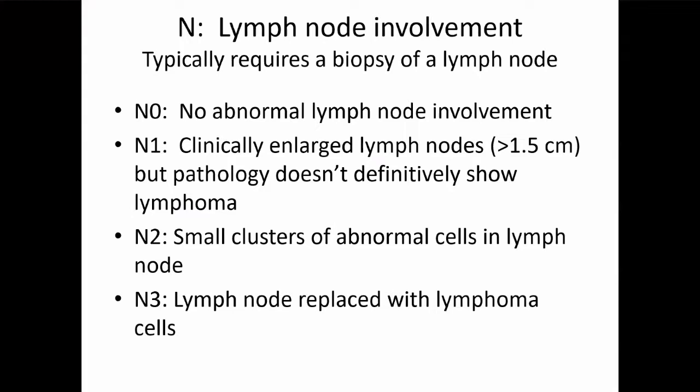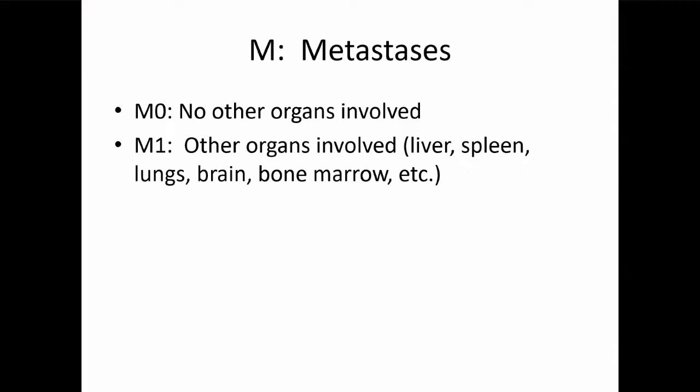For the N staging, there are N0 through N3. If we don't feel anything abnormal or see anything abnormal, that's N0. The rest really require a biopsy to determine if it's abnormal or not, because it's defined by the pathology findings. For metastasis, either you don't have it or you do — M0 and M1.